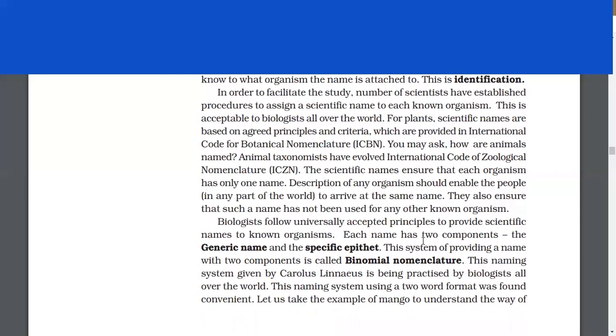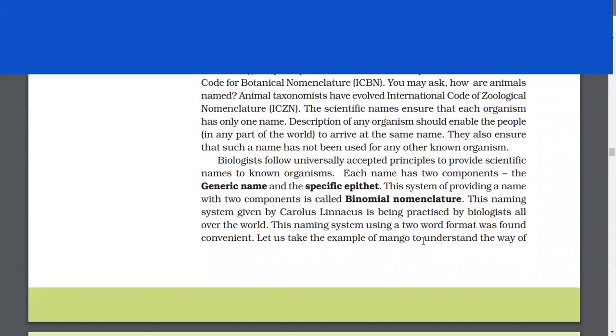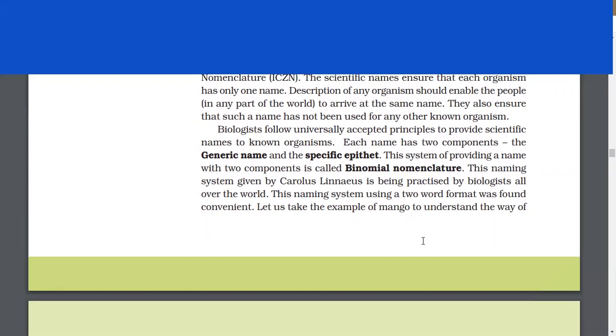The scientific names ensure that each organism has only one name. Biologists follow universally accepted principles to provide scientific names. Each name has two components: the generic name and the specific epithet. This system is called binomial nomenclature. This naming system given by Carolus Linnaeus is being practiced by biologists all over the world.